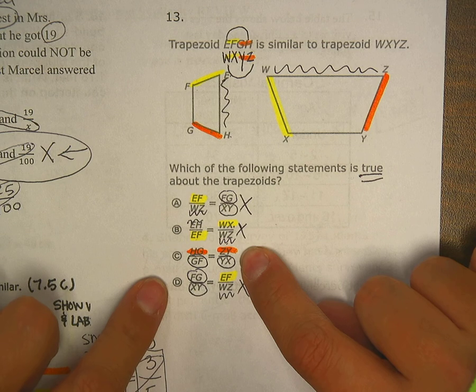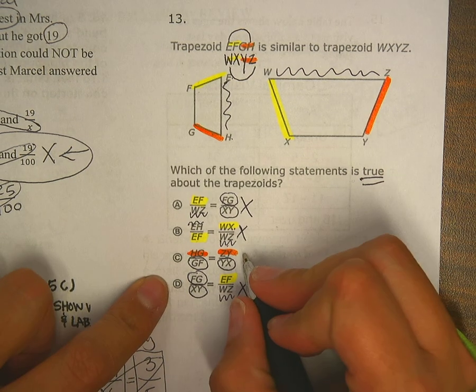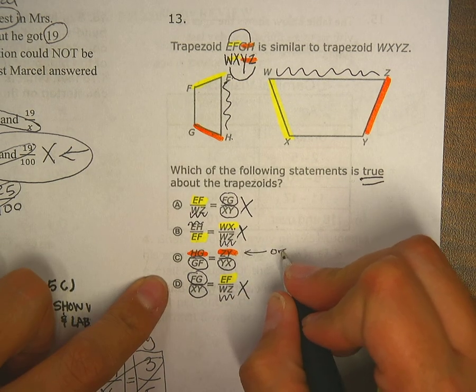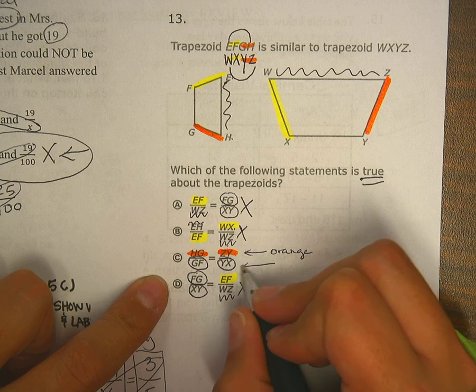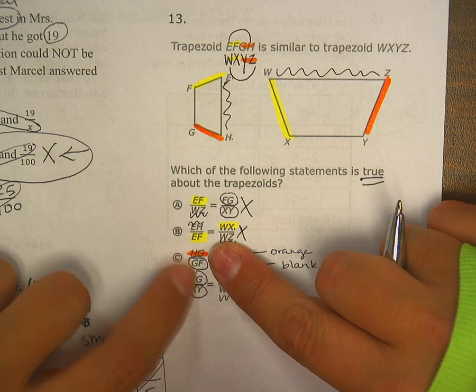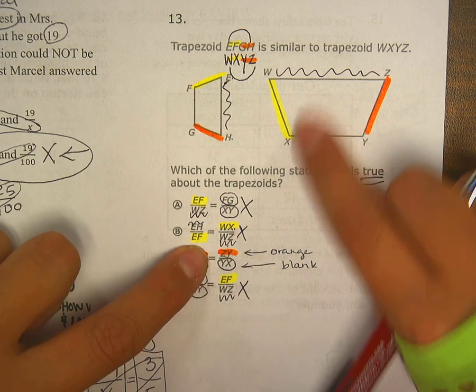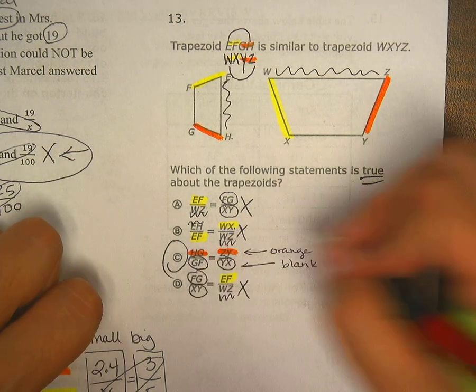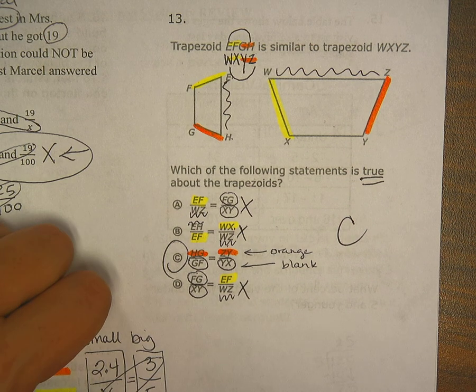The reason why this is the correct answer is because my labels work out. Here, obviously, we have orange. Here, we obviously have blank. And then both of these letters come from the small figure, and both of these letters come from the big figure. So letter C is the correct answer for number 13.